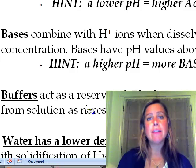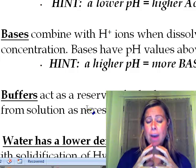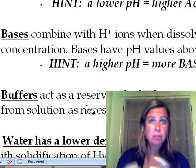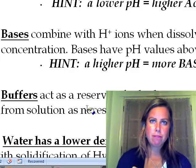It should go from 12 to 11 to 10 or whatever. What's going to happen is, if you have a buffer, the buffer is going to gather up those acidic molecules, those H+, and keep the pH at 12.